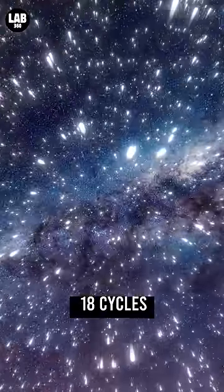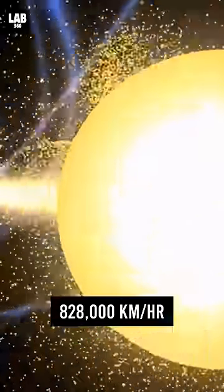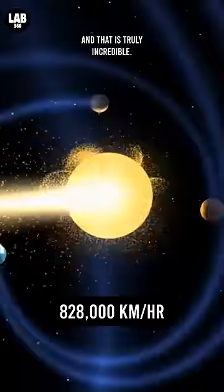The Sun has completed 18 cycles so far, moving at an average velocity of 828,000 km per hour, and that is truly incredible.